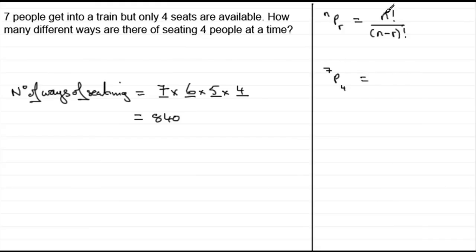So according to the formula, N goes on the top, seven in this case, seven factorial, and it's divided by seven take away the four because R is four, seven take away four, which is three, three factorial.